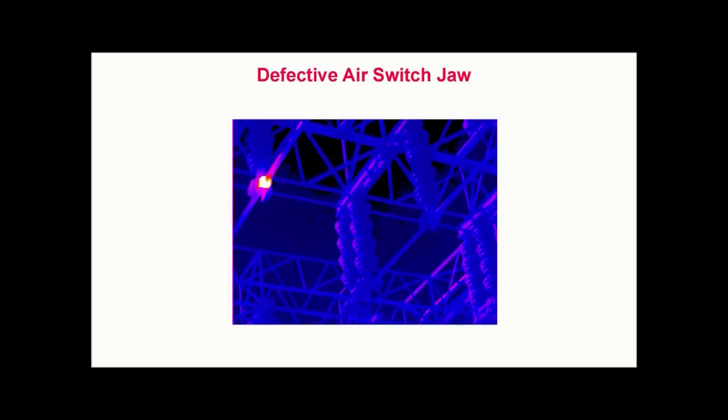This thermal pattern is typical of a loose or deteriorated connection due to the localized heating at the junction of the stationary and movable contacts. Although under the same load, neither of the adjacent switch poles, which are represented in blue, exhibit this type of localized heating.